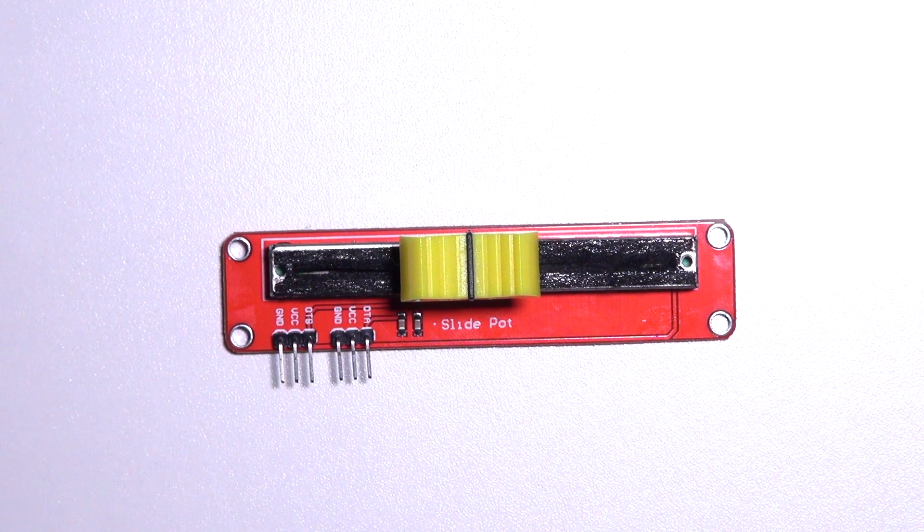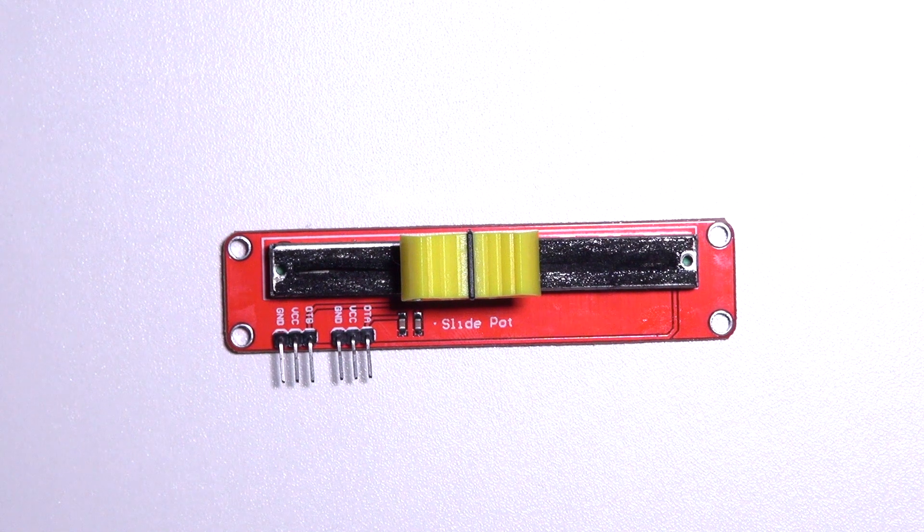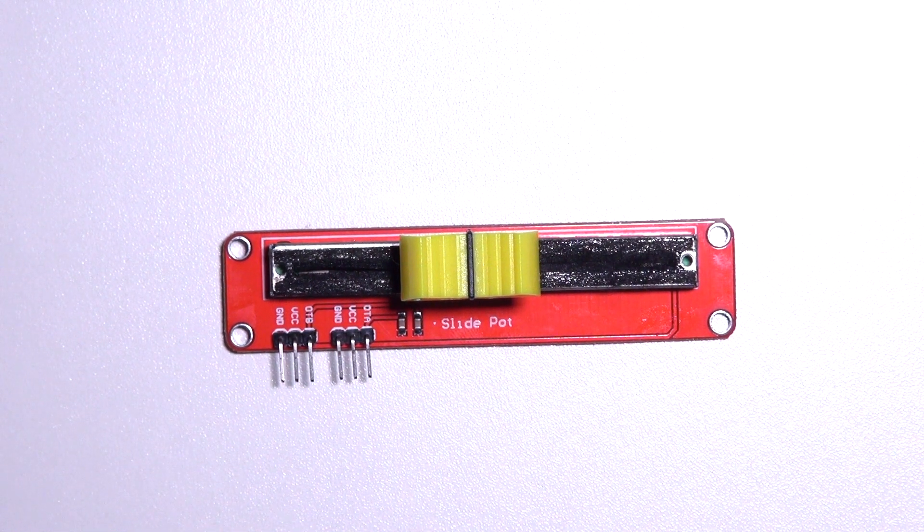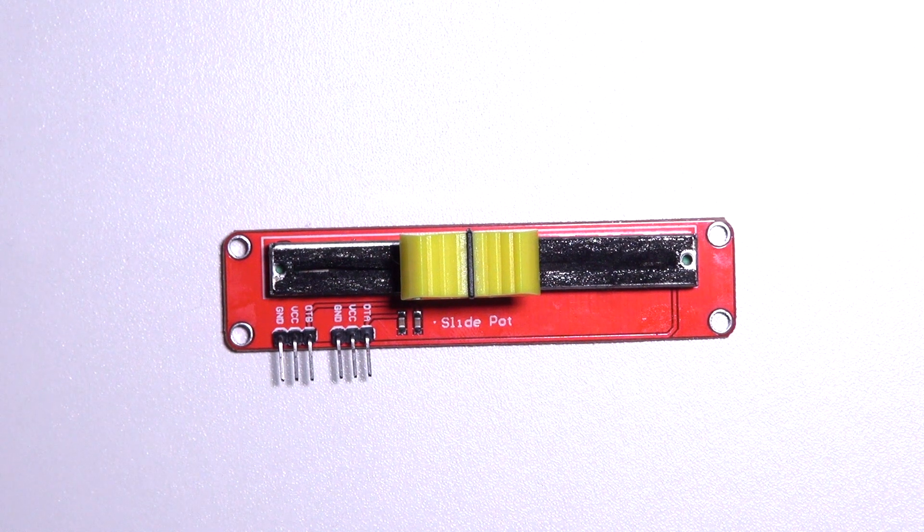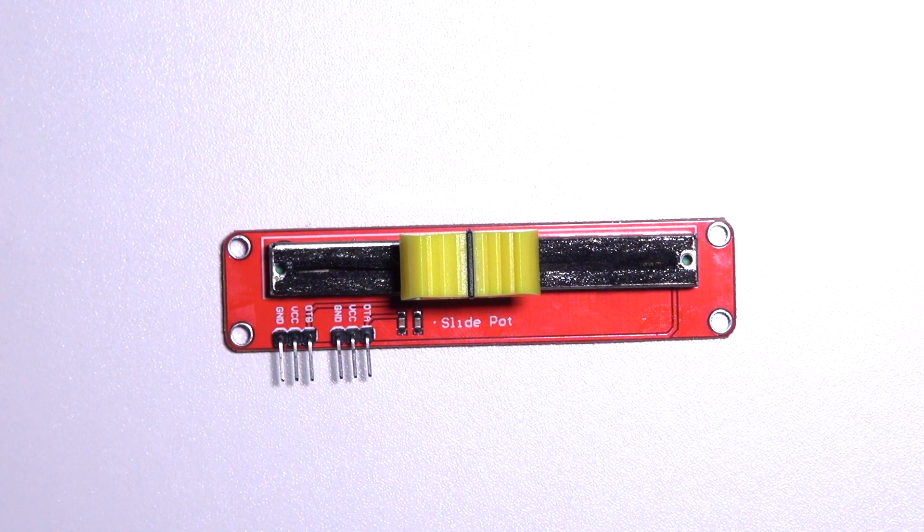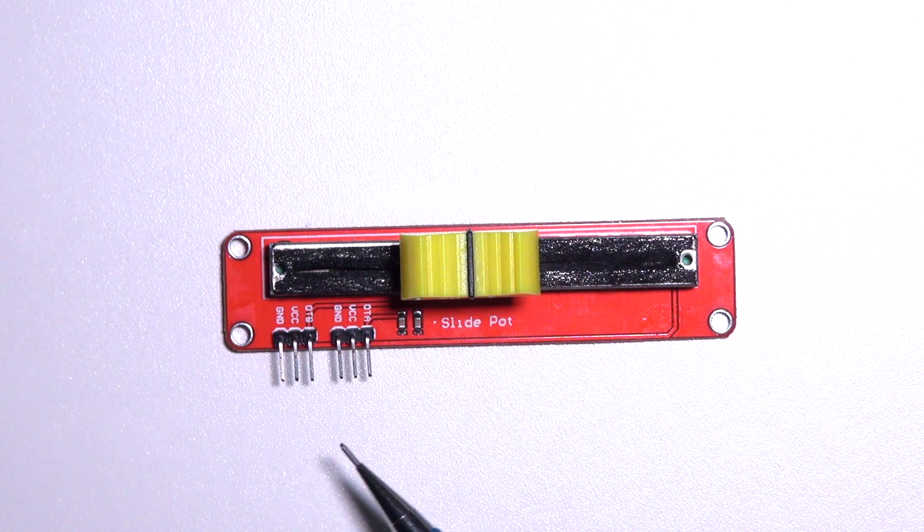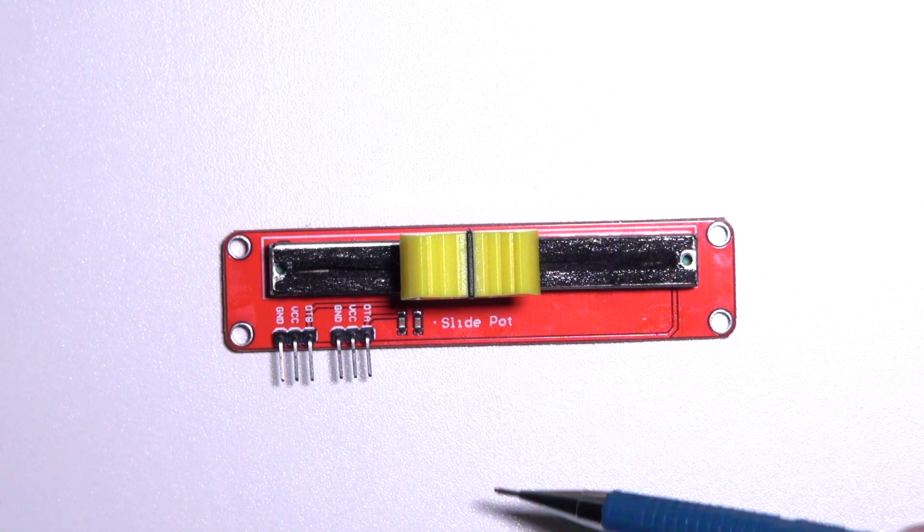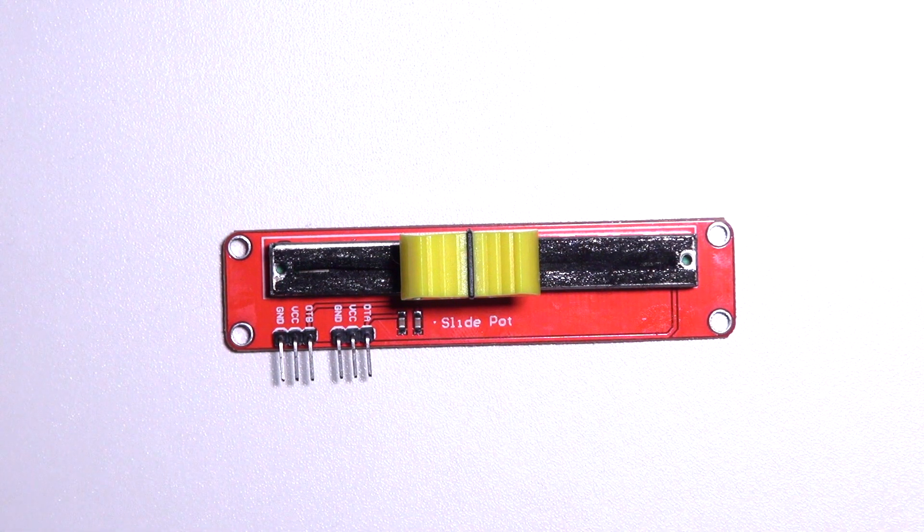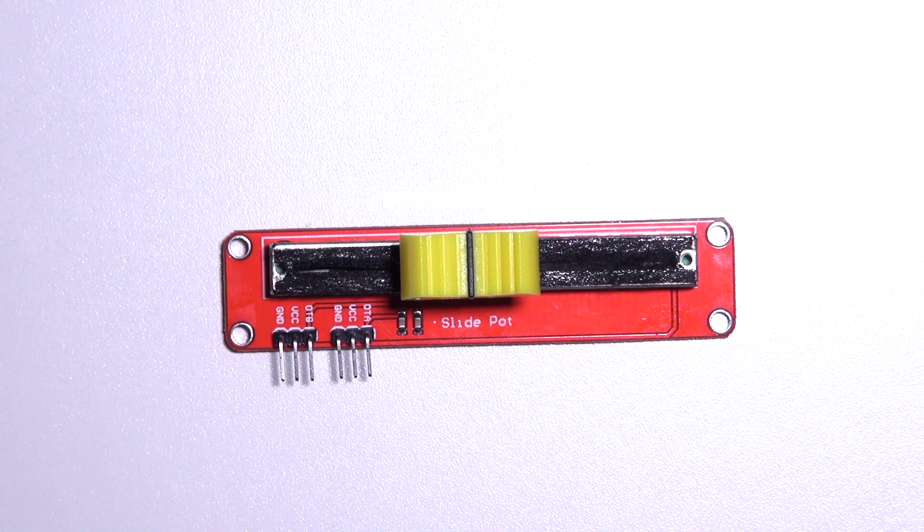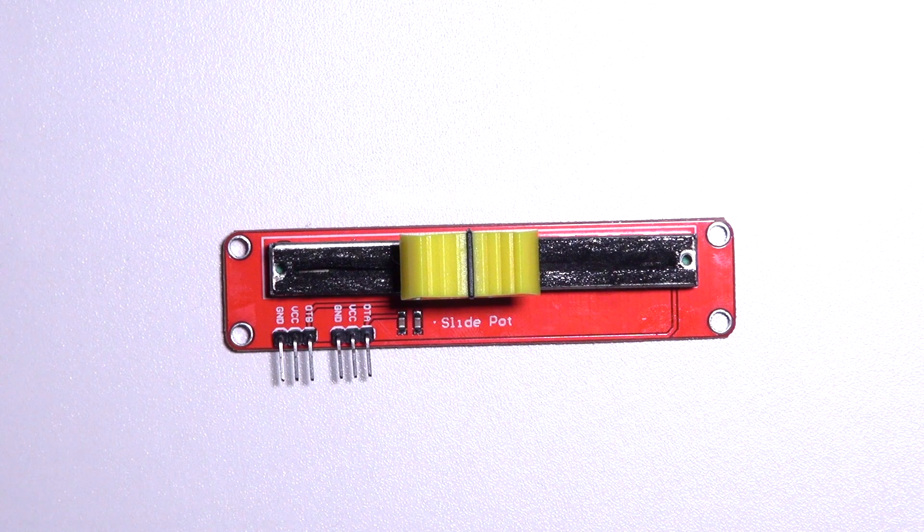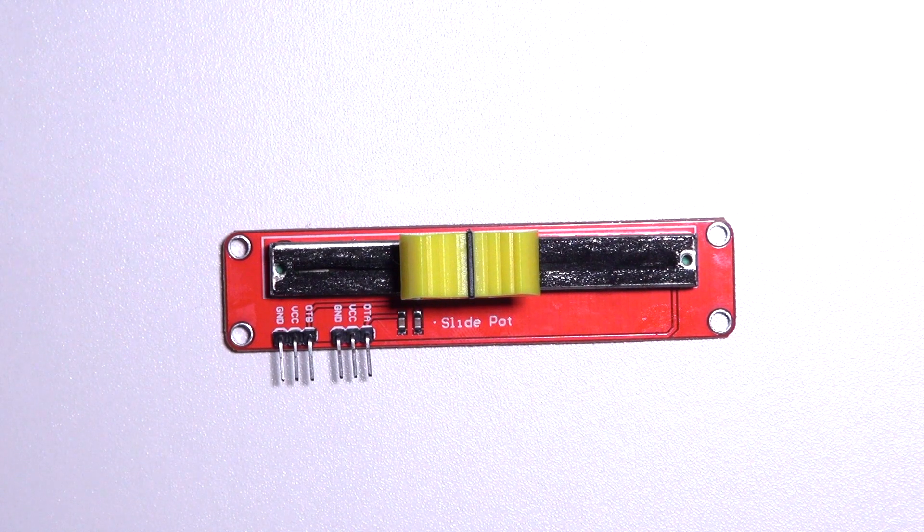This is our sliding potentiometer and basically the slider is just a resistor which adjusts the voltage between VCC and output. There are six pins, and as you can see there is OTA and OTB which means output A and output B. They're exactly the same, but sometimes it's nice to have an extra output.